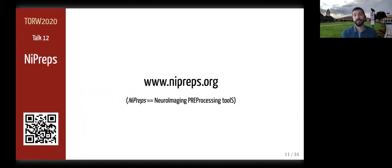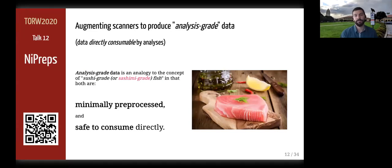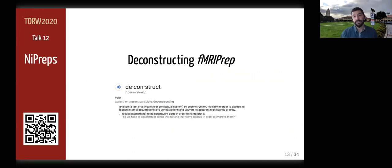The enormous success of fMRIPREP led us to propose its generalization to other MRI and non-MRI modalities, as well as non-human species such as rodents, and particular populations currently unsupported by fMRIPREP, such as infants. The goal of NIPREPs is to extend the scanner so that it produces data ready for analysis. We liken this analysis-grade data to sushi-grade fish because, in both cases, the product is minimally pre-processed and safe to consume as is. For the last two years, we've been decomposing the architecture of fMRIPREP, spinning off its constituent parts that are valuable in other applications — a process of decoupling greatly facilitated by the modular nature of the code since its inception.